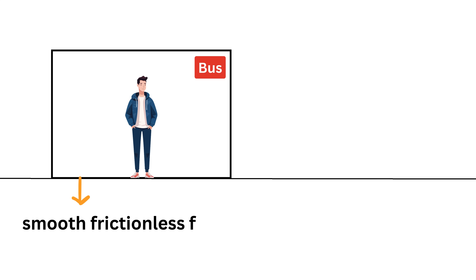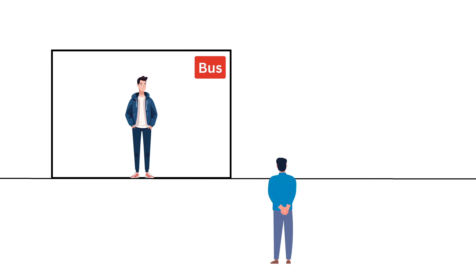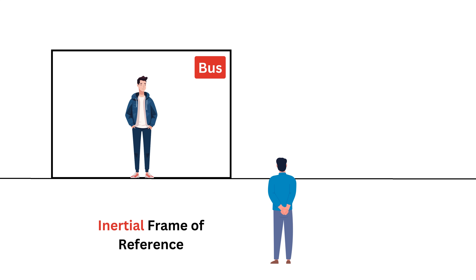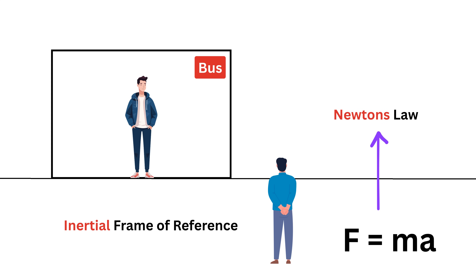Imagine a person standing at the center of a bus with a perfectly smooth frictionless floor, similar to standing on super smooth ice. Suppose I am an observer standing on the ground watching the bus and the person inside it. This ground is not accelerating, so it is called an inertial frame of reference — a fancier way to say that the surface I'm standing on is either at rest or moving at constant speed in a straight line. In an inertial frame, Newton's law F = ma applies exactly as stated without any modifications.